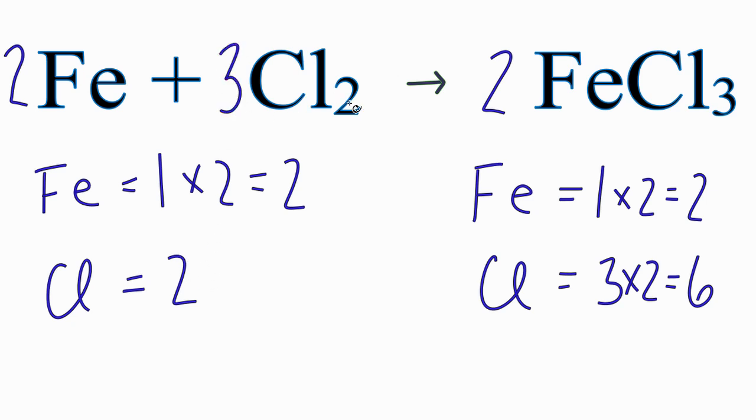if I put a three here, two times three, that equals six. And now I have six chlorine atoms on the reactants, and six chlorines on the products.